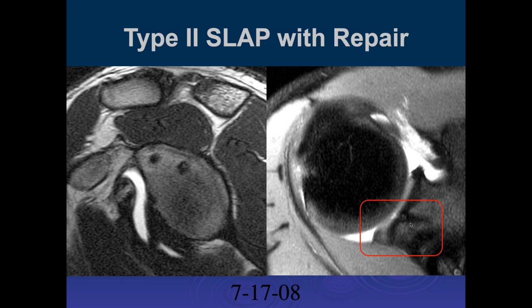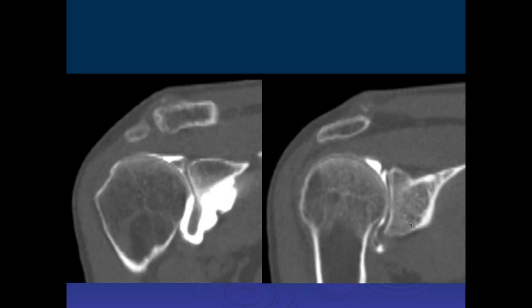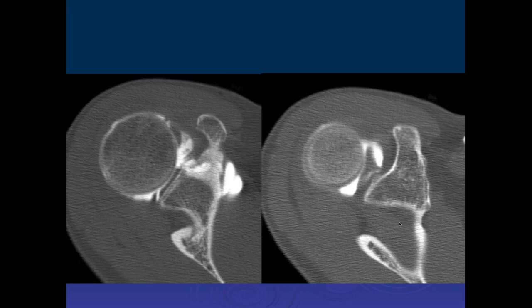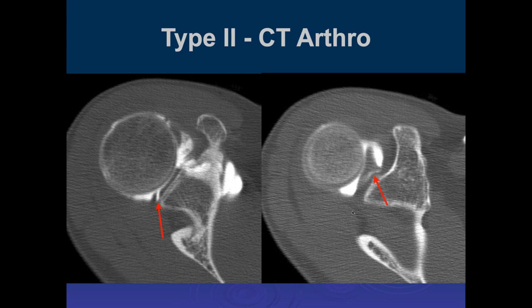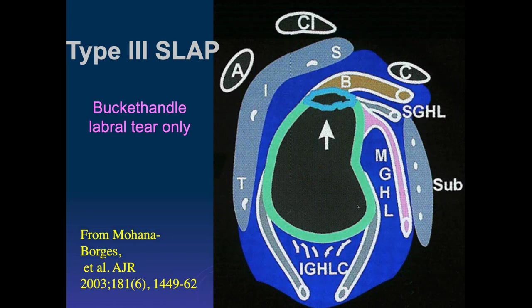On this CT arthrogram, contrast signal extends along the superior labrum posteriorly past the biceps anchor — consistent with a SLAP tear. Again on the axial images, we see contrast along the chondrolabral junction going posterior to the biceps anchor, confirming another SLAP tear.